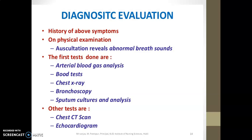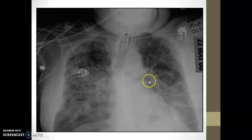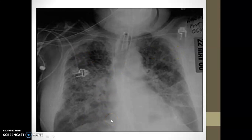Diagnosis involves taking a history of the above symptoms including past medical history. On physical examination, auscultation reveals abnormal breath sounds. ABG analysis is the first line when the patient arrives needing immediate care. Additional investigations include blood tests, chest X-ray, bronchoscopy, sputum cultures, chest CT, and echocardiography. On imaging, the patient with ARDS shows significant cloudiness on chest X-ray bilaterally.